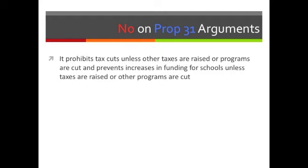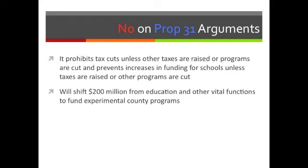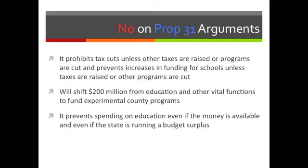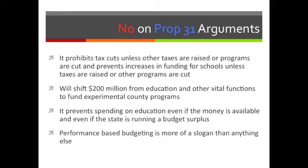Opponents say it prohibits tax cuts unless other taxes are raised or programs are cut, and prevents increases in school funding unless taxes are raised or other programs are cut. Prop 31 will shift 200 million dollars from education and other vital functions to fund experimental county programs. It prevents spending on education even if the money is available and even if the state is running a budget surplus. Performance-based budgeting is more of a slogan than anything else — the one thing it will do is raise costs.